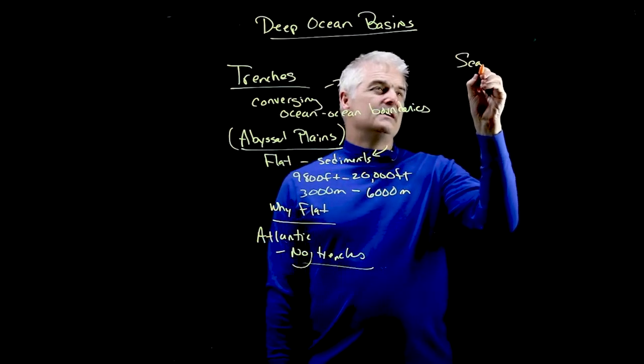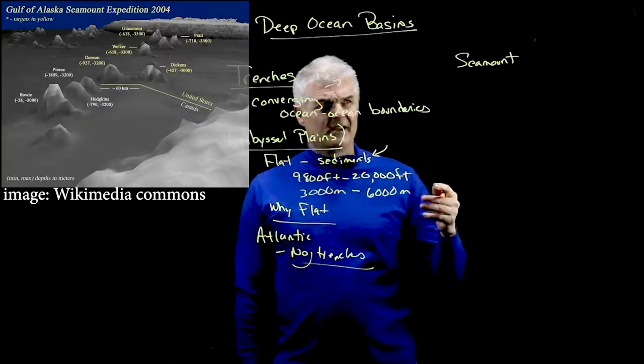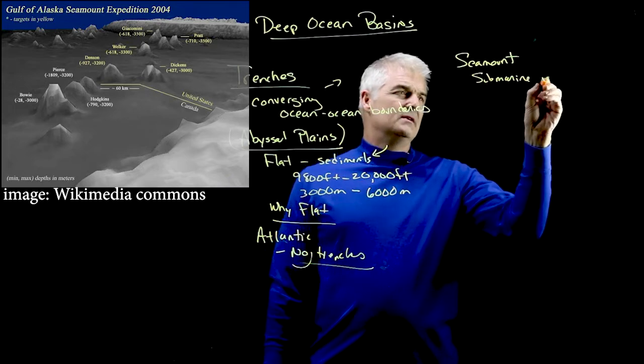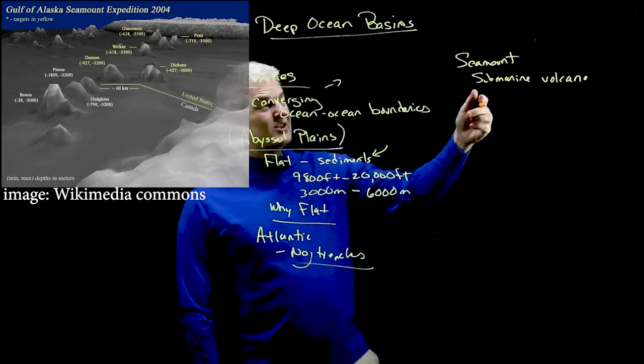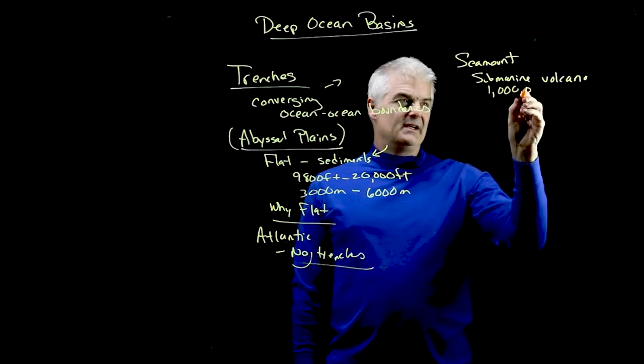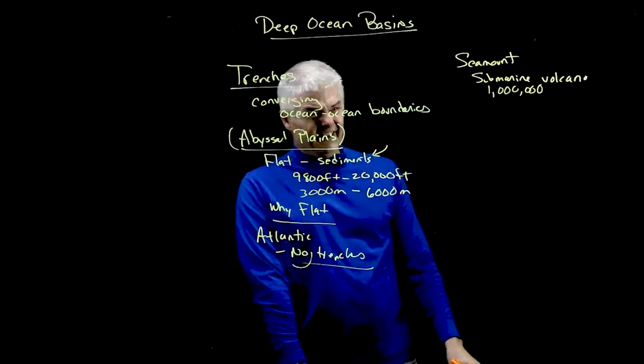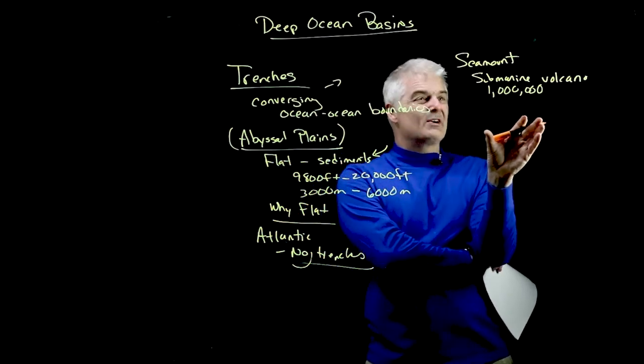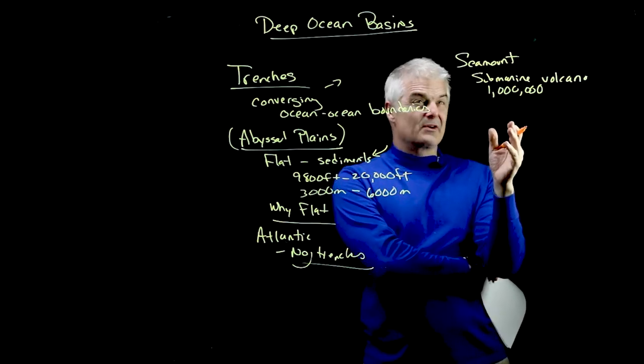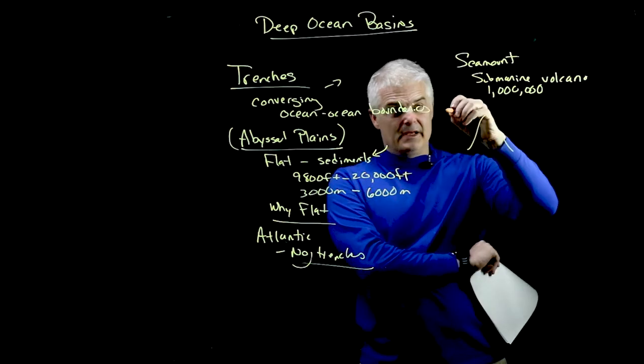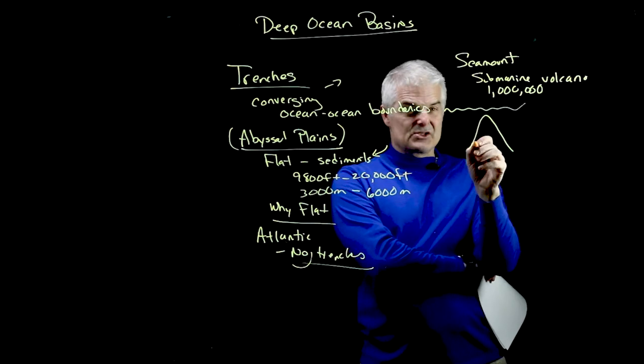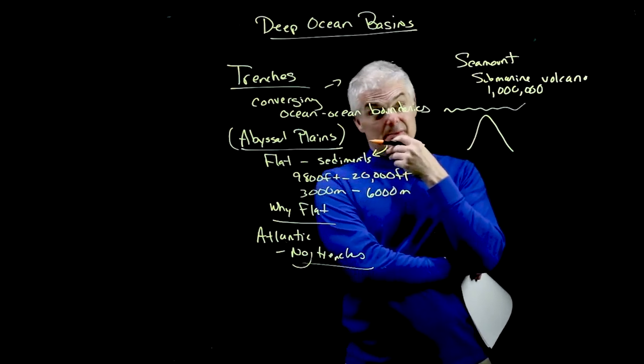The next one is a seamount. Essentially what this is is a submarine volcano, an underwater volcano. You know how many underwater volcanoes there are? A million. A million underwater volcanoes. I think it's pretty awesome. These are all over the planet. You can find all these little submarine volcanoes. They rise up, but they don't always make it up to the surface. Underneath the ocean, you can find a seamount.